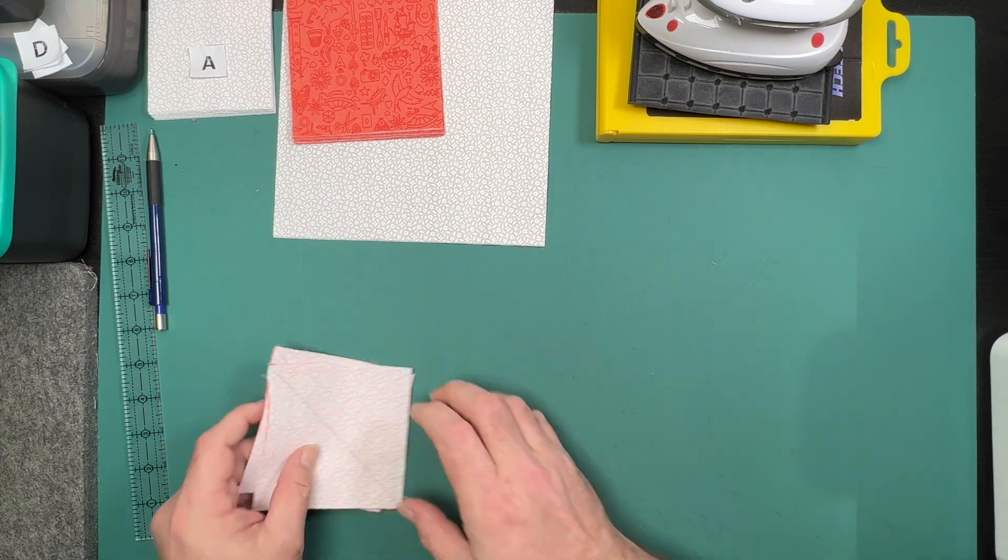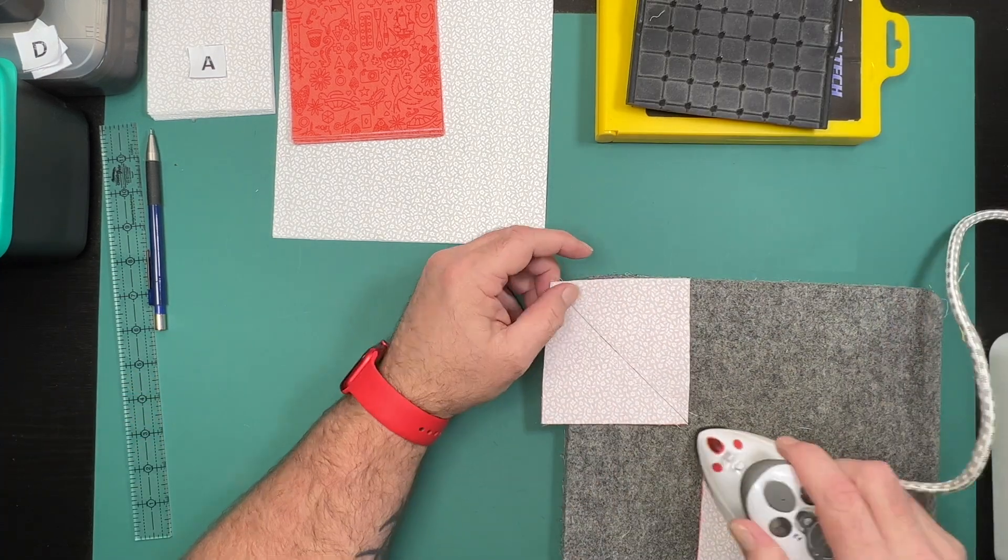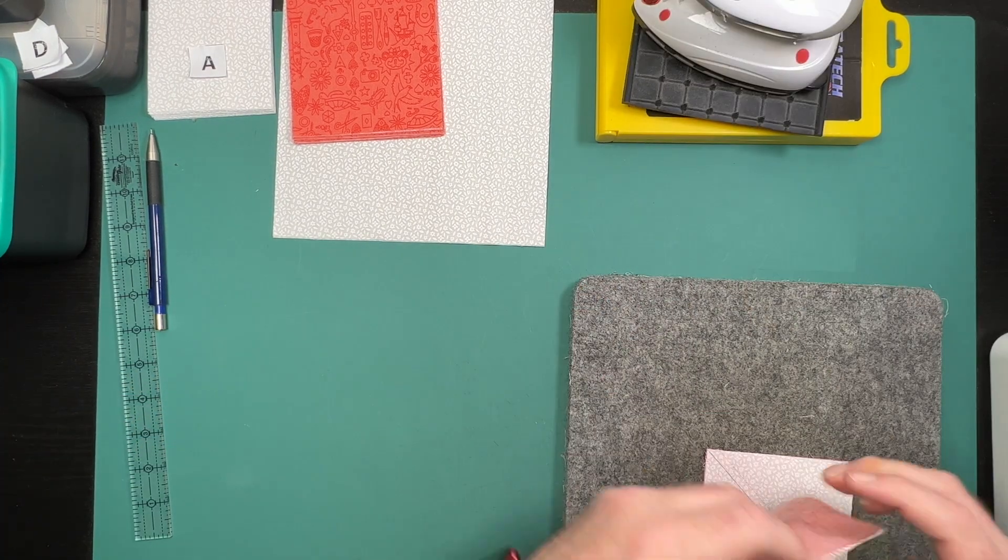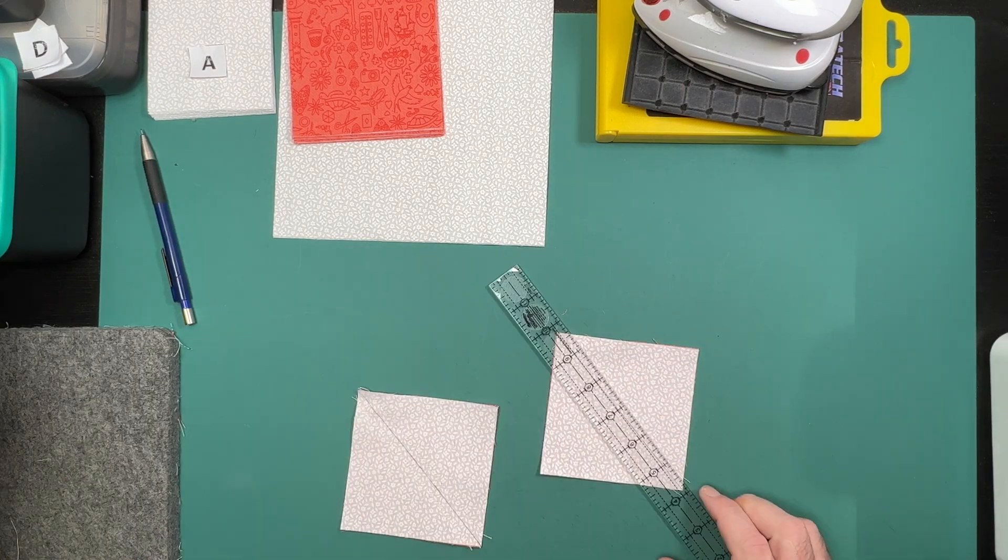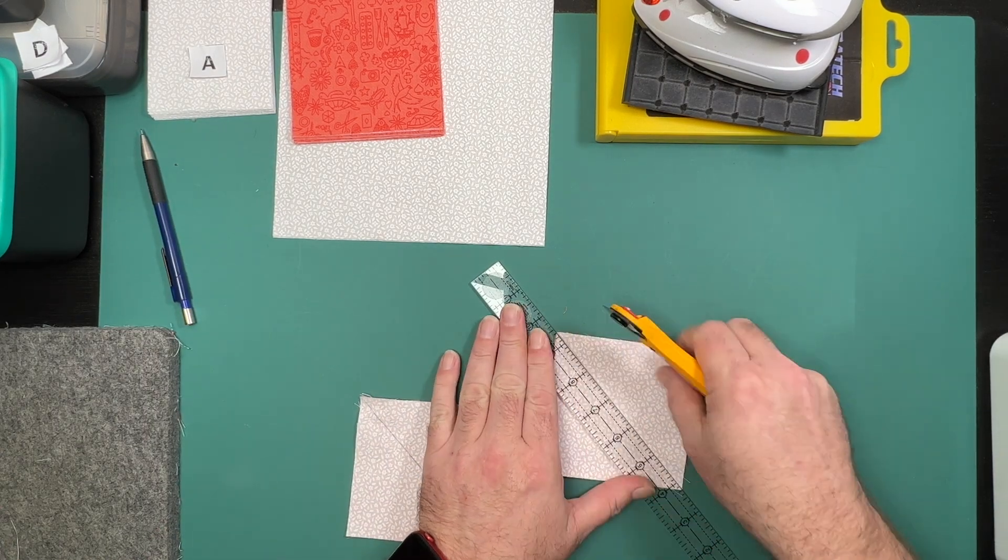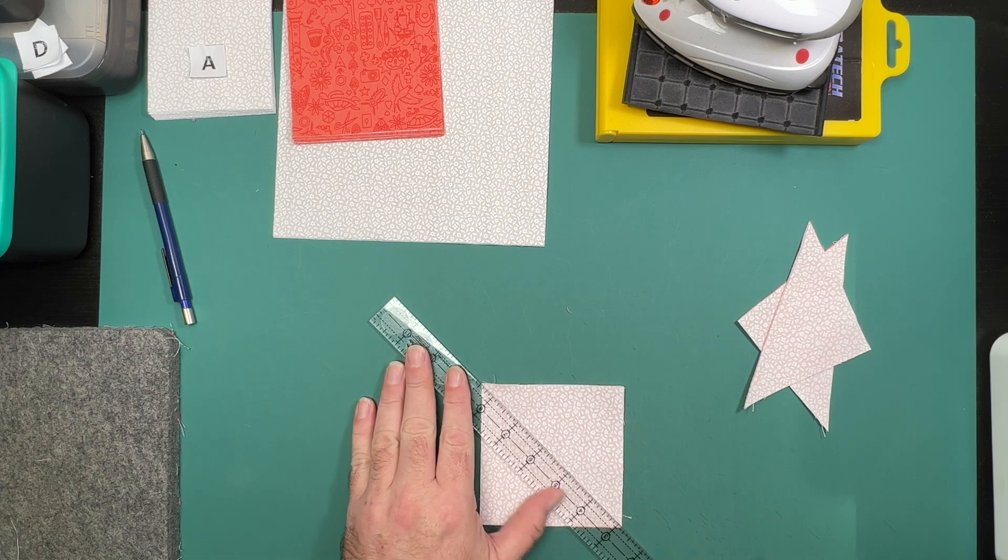With this stitching now done, we will give them a quick press to set those seams and make sure those threads sink into the fabric before slicing them in half on our drawn line and then pressing towards the dark side.